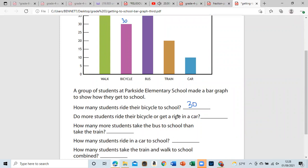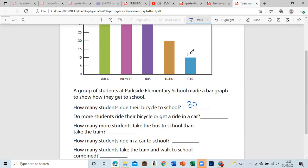Do more students ride the bicycle or get a ride in a car? So this is a yes or no. The more students ride the bicycle, or they ride in a car. And as we can see, the car is 10, so more students walk, so we can say yes, more students walk.